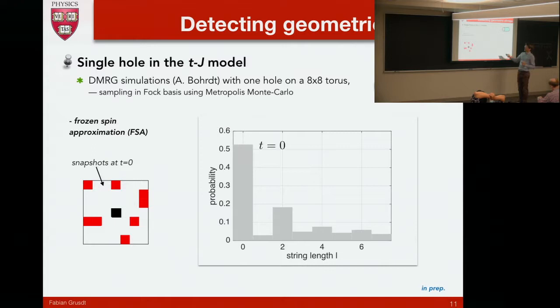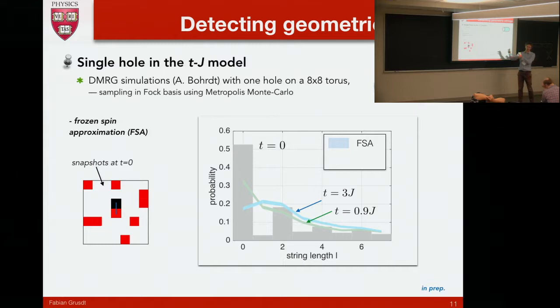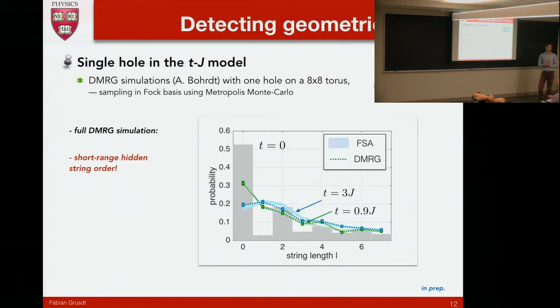To answer this question, let's first see what this geometric string picture suggests. What we do now is we take the same snapshots at tunneling zero. Here the doping's not really important, the hole is there, but it's stuck, so it doesn't do much. Then we move the hole around by hand and mess up the spin environment in these snapshots. So we kind of modify the snapshots by hand. Then we get these curves. This is tunneling point 1J, 3J. You can see immediately the background changes a lot, and also the tunneling parameter has an important effect on this.